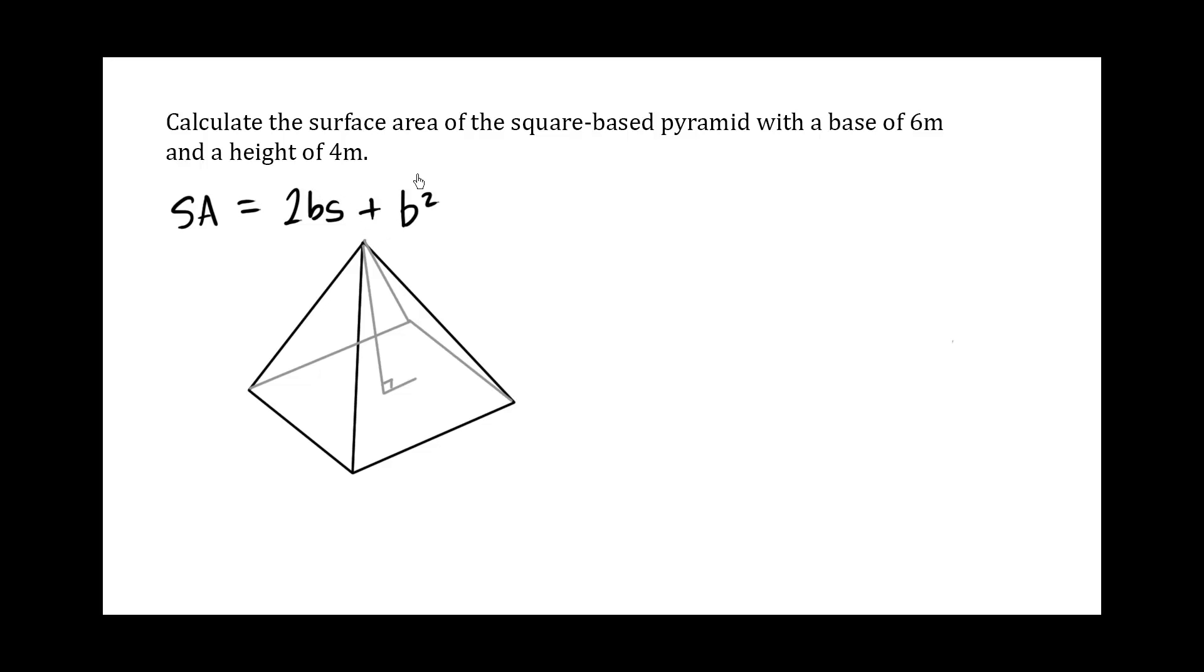Let's calculate the surface area of the square base pyramid with a base of 6 meters and a height of 4 meters. Now, we're given the surface area formula of a square base pyramid as 2 base times the slant plus b squared.